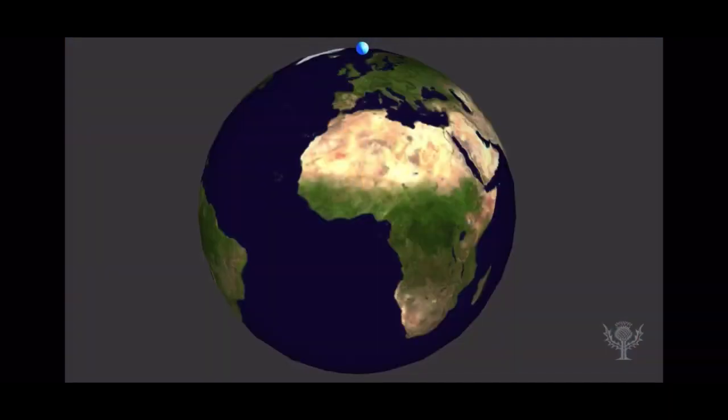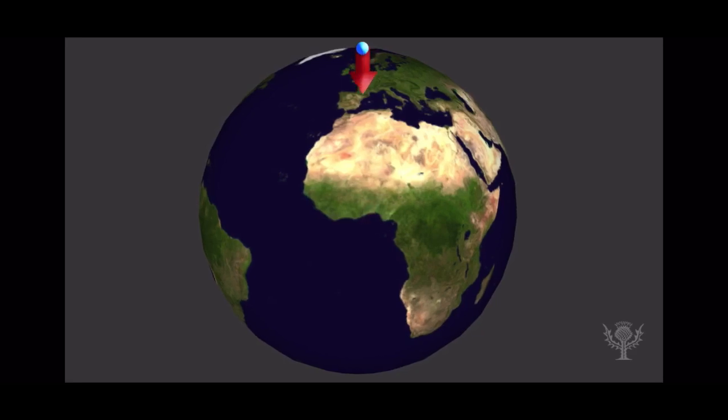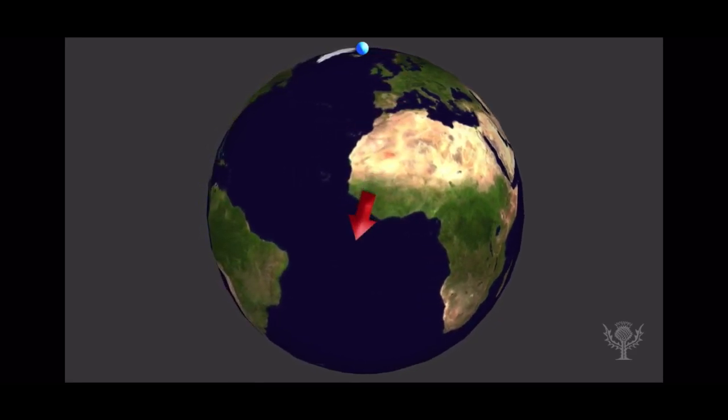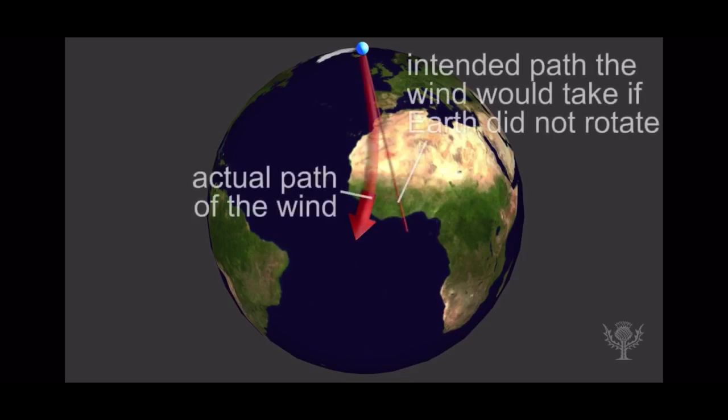This air does not move in a direct line from the poles to the equator, though, because of Earth's rotation. As Earth rotates, it changes the direction of the global winds passing over it, causing them to curve. This is called the Coriolis effect.